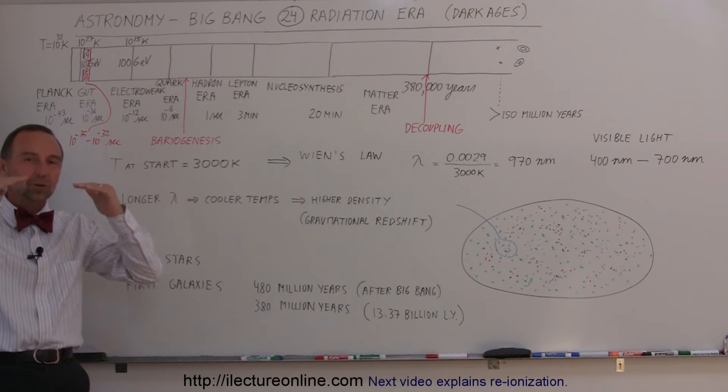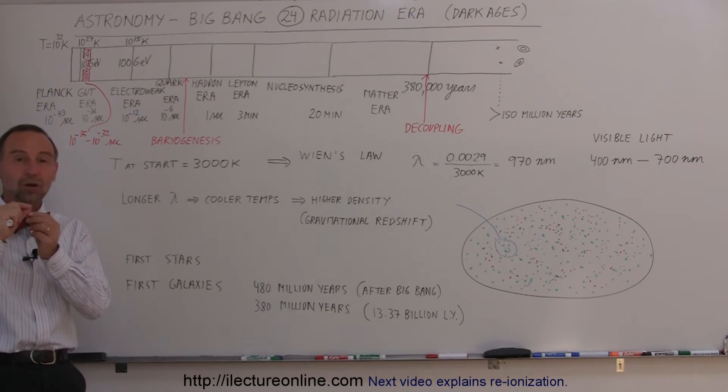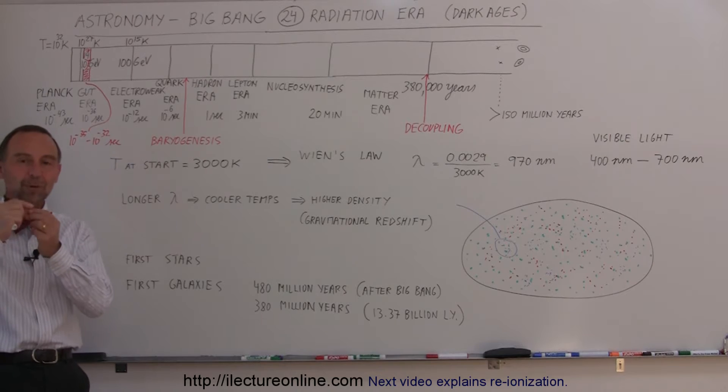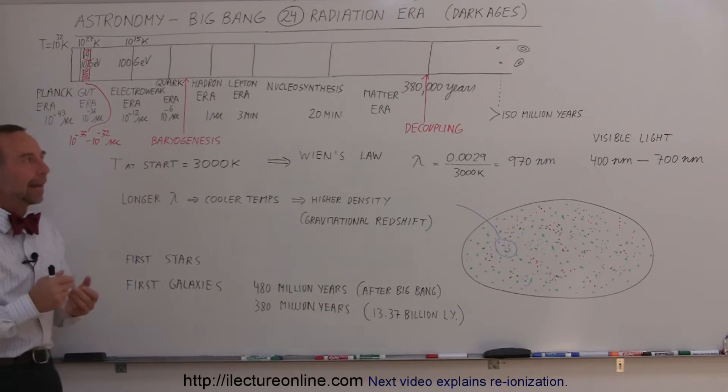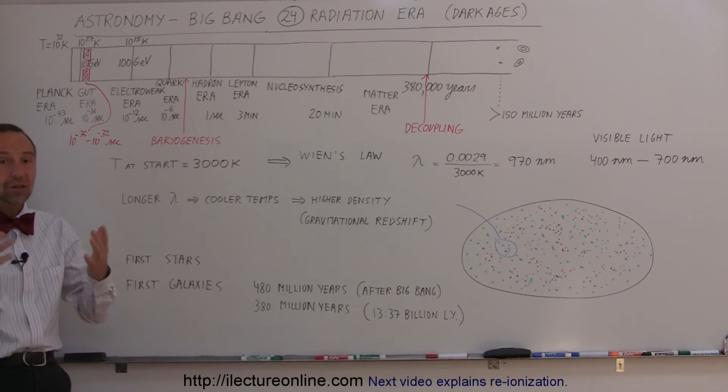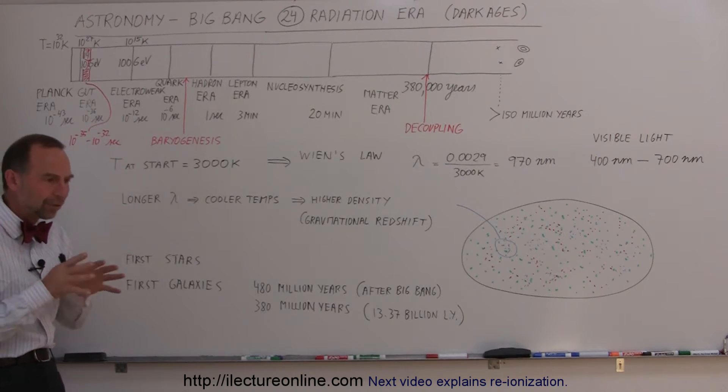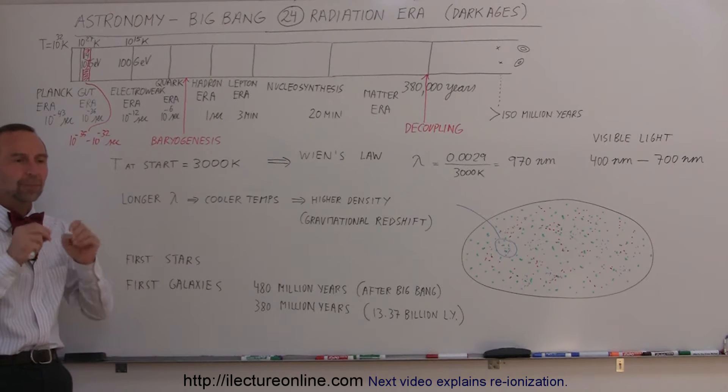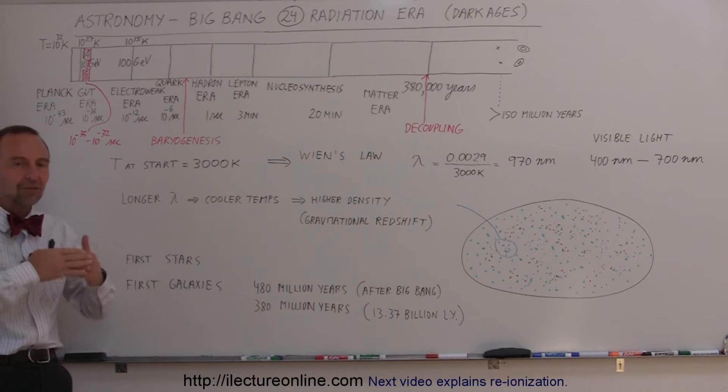The universe had cooled sufficiently to about 3000 Kelvin to the point where electrons no longer were ionized away from the protons and began to recombine into atoms. We had atomic hydrogen now, and the cosmic microwave background radiation was able to freely roam throughout the universe, undisturbed by matter.